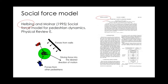The social force model contains multiple force types. There is a driving force that drags the pedestrian towards the destination. We have forces from other pedestrians — if another pedestrian is moving toward them or their paths are going to intersect, they impose forces against each other. If they get too close, they move away. There are also forces from obstacles, like walls, that discourage pedestrians from getting too close.